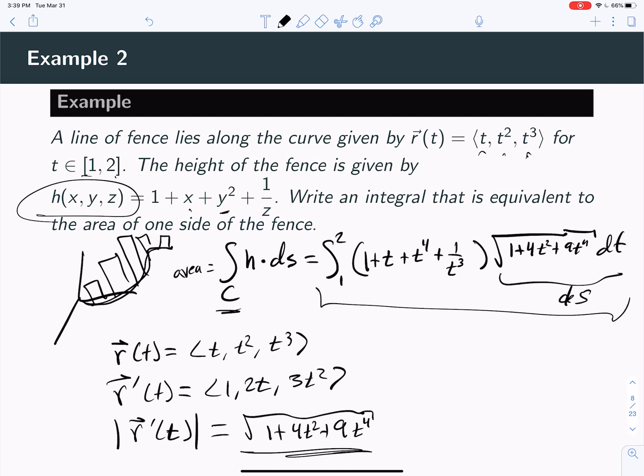And now what this is, then, is a function. It gives you the height of the fence times the length of the fence. Add those up, you get area. Add up all the little areas, you get the total area. So there's an integral that's equivalent to the area of one side of the fence. And I'll leave it to you to work out that integral if you want to know what the answer is.